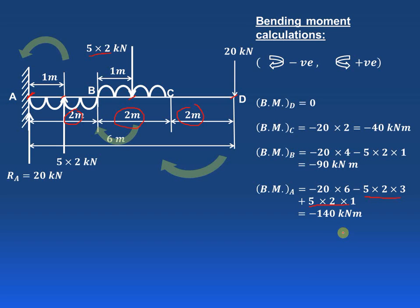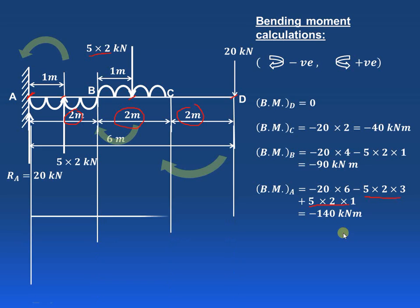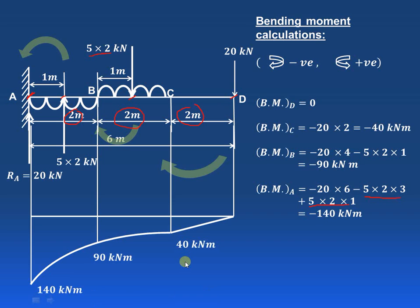Using these values we can easily draw the bending moment diagram. This is the baseline. All the moments are negative so they will be below the baseline. As there is a UDL, there will be a parabolic curve in the corresponding region, and the various values are also written. In this way we can draw the shear force and bending moment diagram for typical cases. Thank you very much for watching.